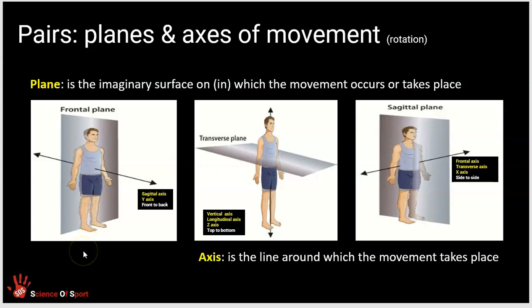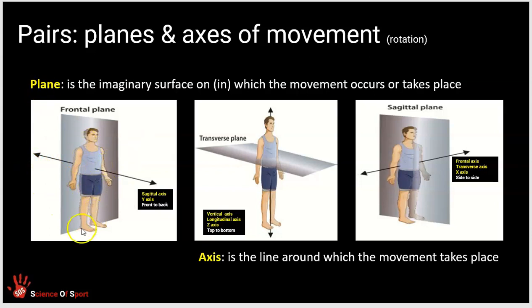Let's look at the frontal plane. The body has been divided into a front half and a back half, and that grey square or rectangle shows the division of the body into two halves — a front and a back half. That's called the frontal plane. The sort of movement that occurs in that imaginary space is something like a star jump, where abduction and adduction would occur — the arms and legs go out to the side, moving in that frontal plane.